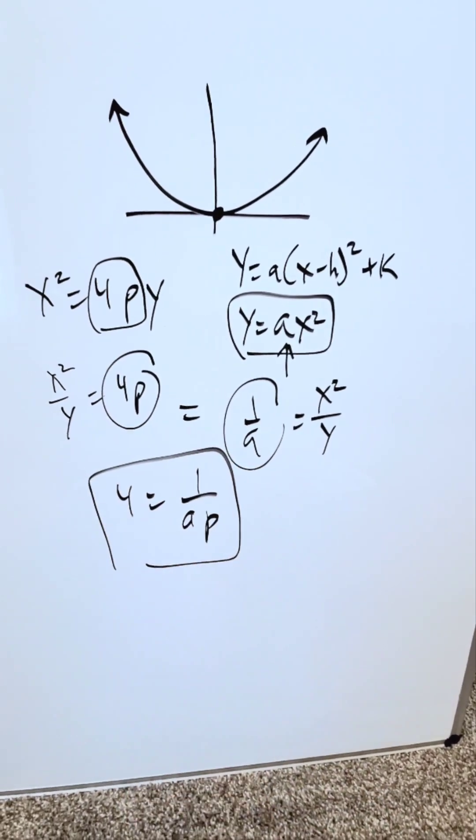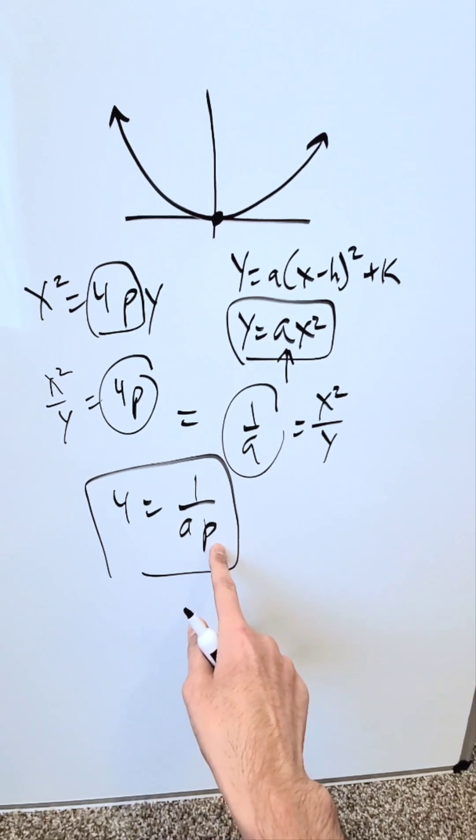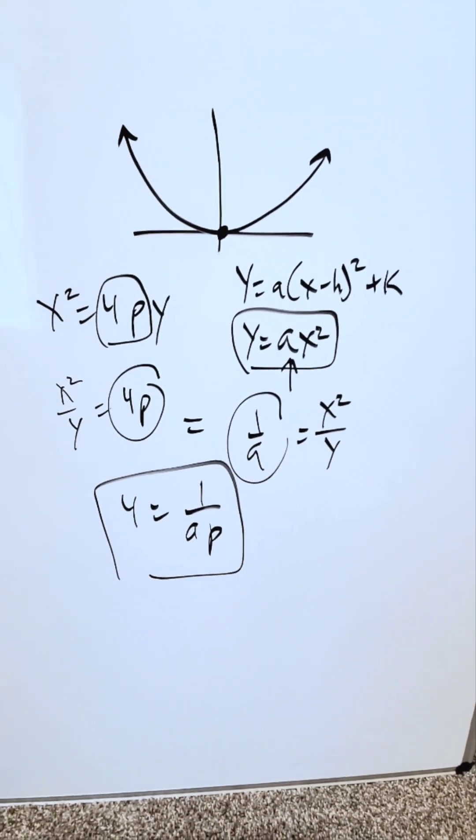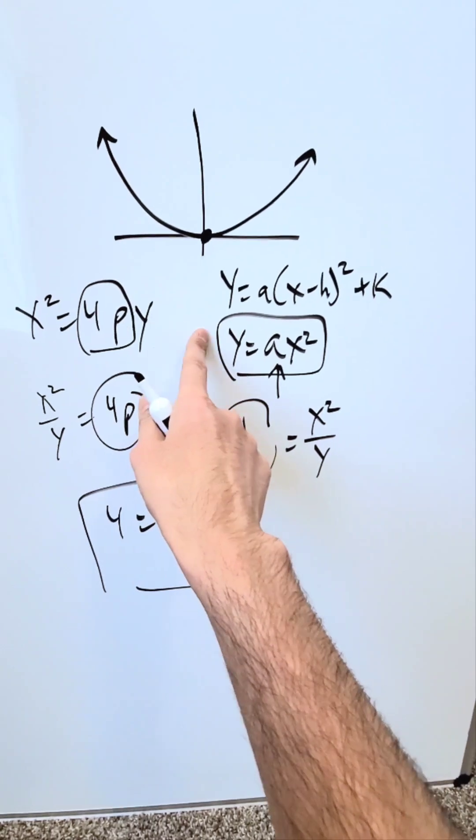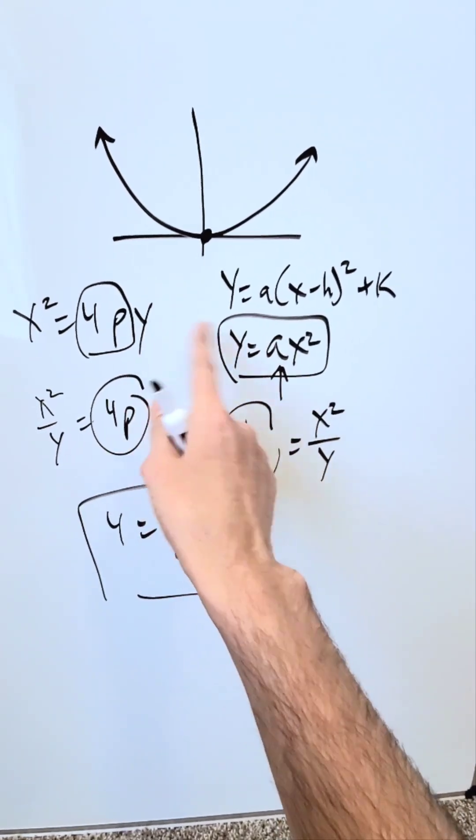So you're seeing a relationship over here, which is this. The reciprocal of your a and the focal point factor p, the product of those two will always equal 4. This relationship helps you interrelate both of these equation forms, which represent the same parabola, albeit in different ways.